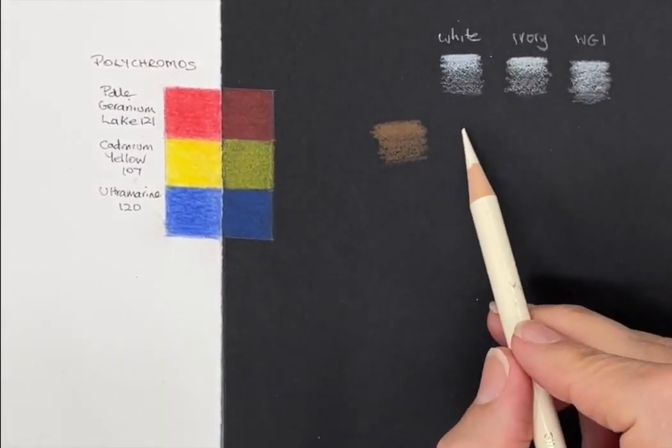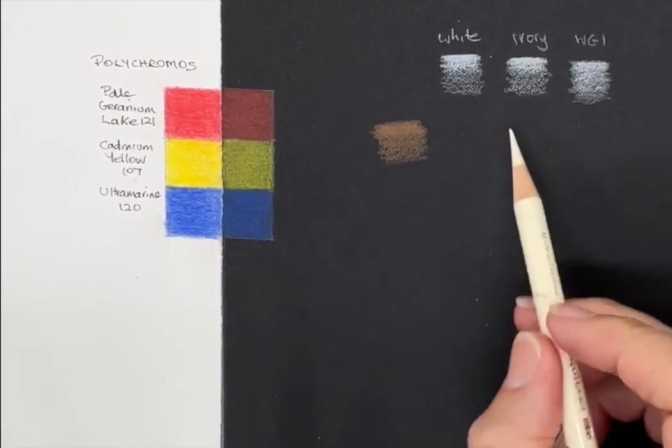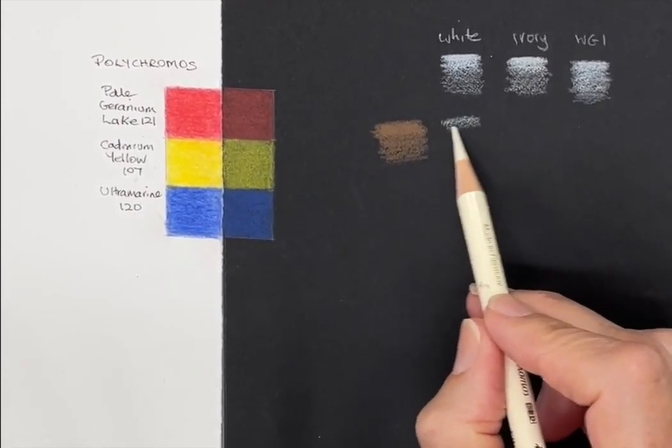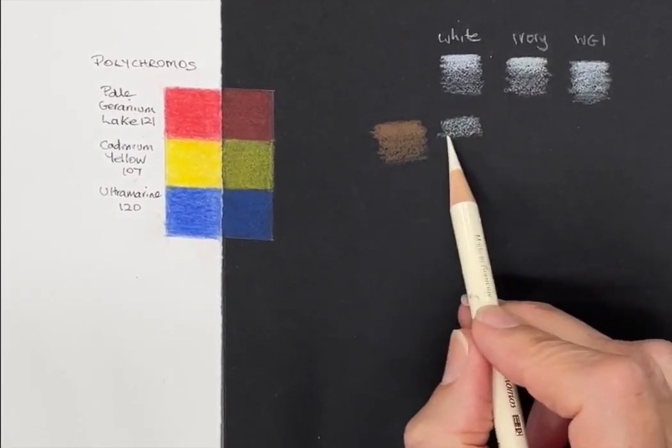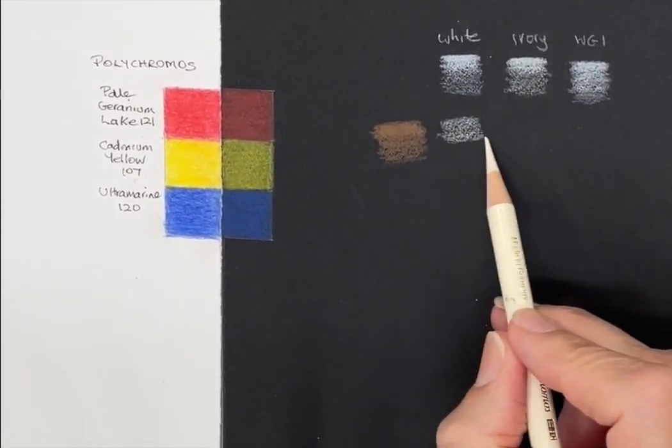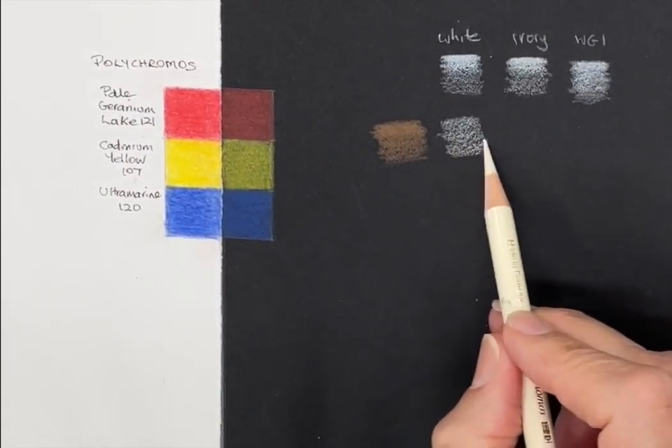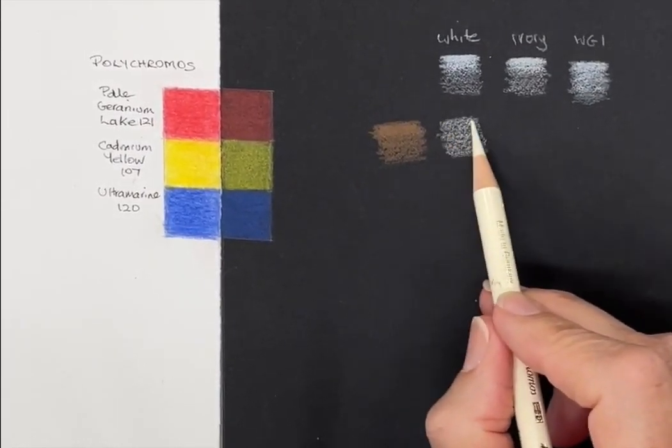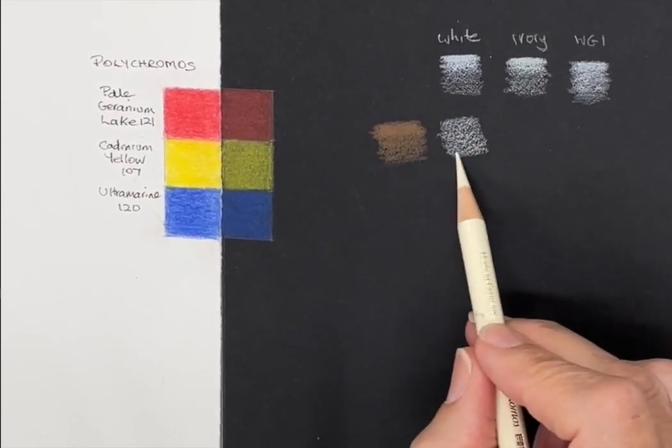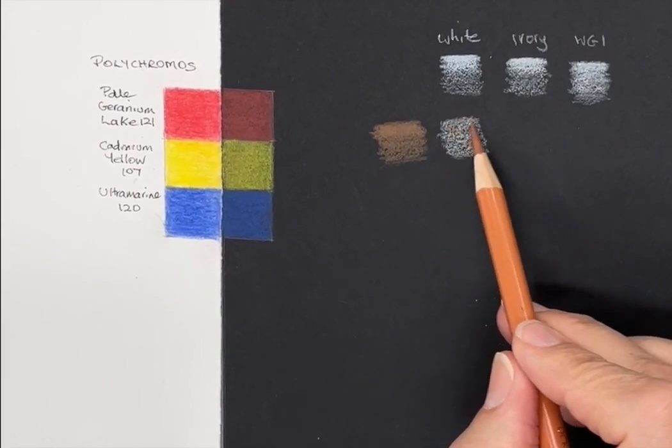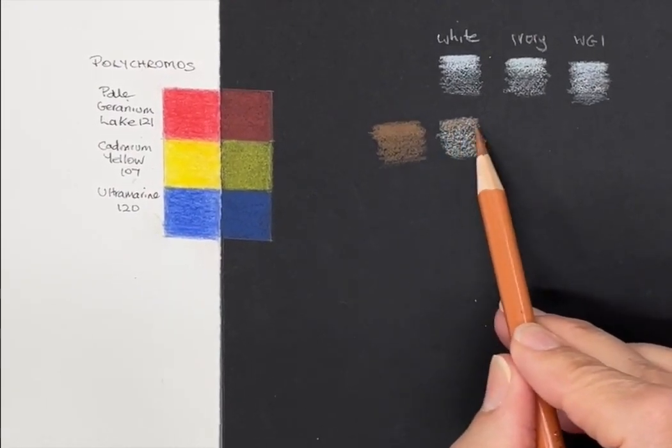If we use ivory underneath, just a very light even layer—that layer has to be even because it will pick up the texture of that under layer with the pressure. I can see it's actually brighter.